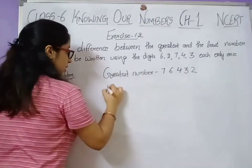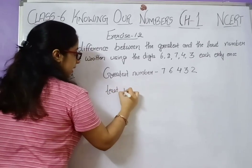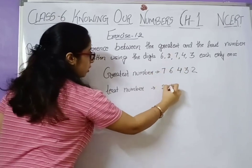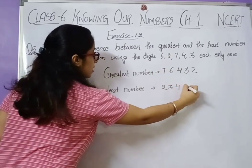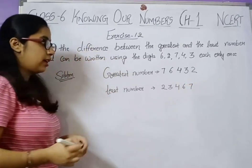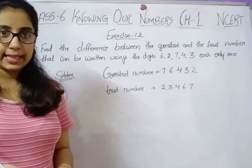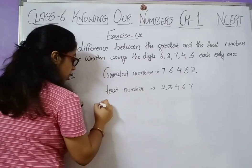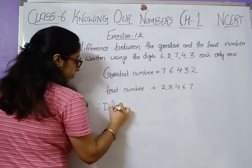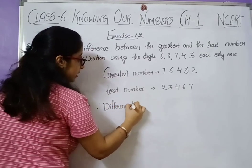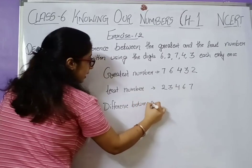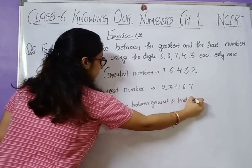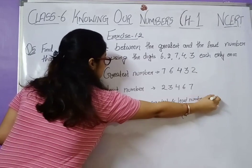Now write the least number. Again using the same digits, arrange them in ascending order: 2, 3, 4, 6, 7. So the least number is 23,467. After writing both the greatest and least number, you have to find the difference.